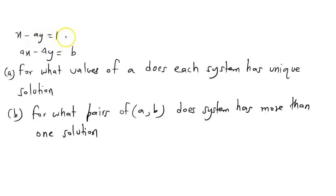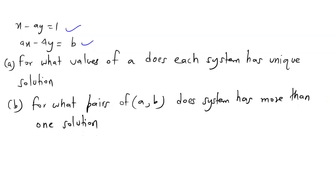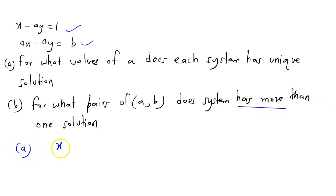Hello students. We are given here a linear equation: x minus ay equals 1, and ax minus 4y equals b. We need to find for what values of a does the system have a unique solution, and second, for what pairs of a and b the system has more than one solution. Now we are going to calculate this.